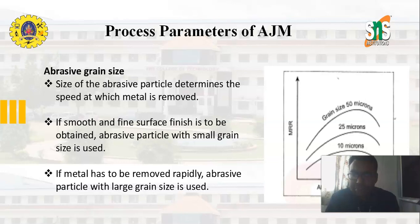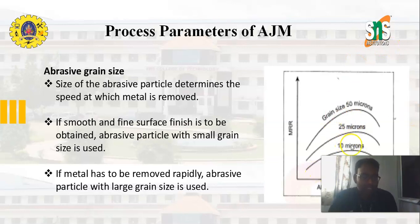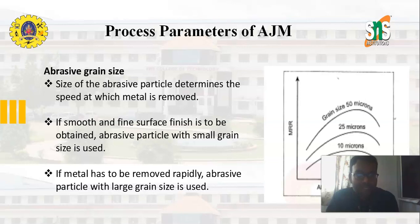The next important parameter is abrasive grain size. The size of the abrasive particle determines the speed at which metal is removed. If a smooth or fine surface finish is to be obtained, abrasive particles with small grain size are used. If metal has to be removed rapidly, abrasive particles with large grain size are used. From the graph, using abrasive particle size of 10 microns gives a lower metal removal rate compared to 25 microns or 50 microns. If we want to remove metal rapidly, we can use the maximum size of 50 microns abrasive particles.